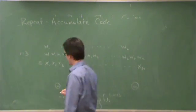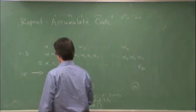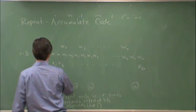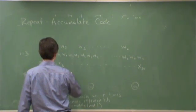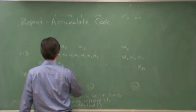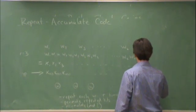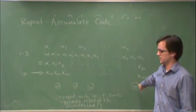We then permute some random permutation pi. So, then I have x of pi of 1, x of pi of 2, x of pi of 3, and so on up to x of pi of 3k. Remember, these are all equal to some w. It's just a relabeling.